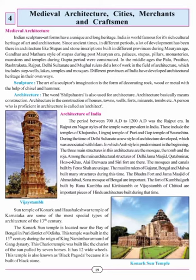Medieval Architecture: Indian sculpture and art forms have a unique and long heritage. India is world famous for its rich cultural heritage of art and architecture. Since ancient times, development has occurred in architecture — stupas and stone inscriptions during Mauryan age, Gandhar and Mathura style of stupas during post-Mauryan era, and palaces, stupas, pillars, monasteries and temples during the Gupta period. In the Middle Ages, the Pala, Pratihar, Rajtrakuta, Rajput, Delhi Sultanate and Mughal rulers did a lot of work in architecture, including stupas, lakes, temples and mosques.